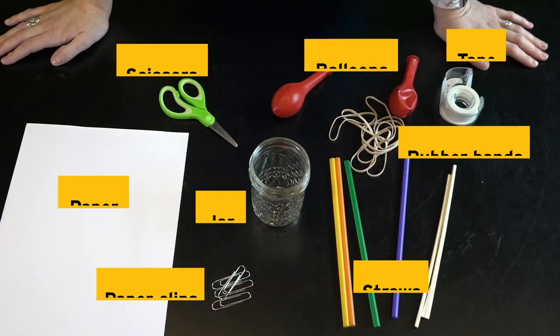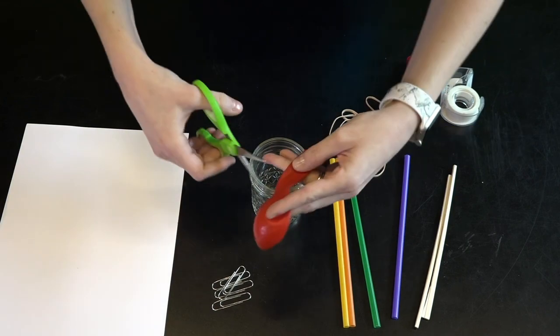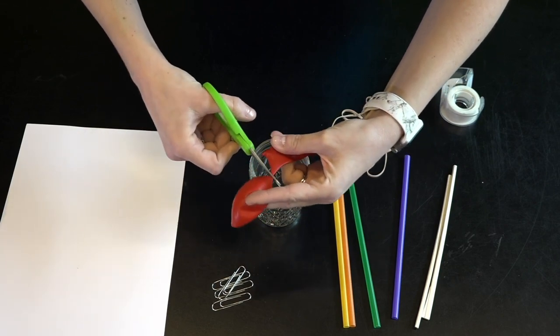To make your own barometer you'll need some common items that you can find around your house. To start off we're going to set the glass jar on a flat surface. Next, cut the neck off of the balloon so that you have a nice round part left over.